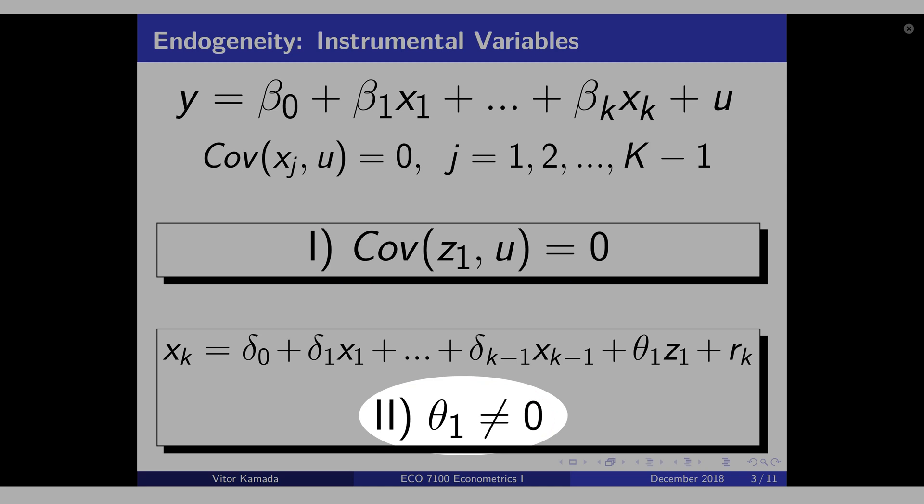This assumption here you can test empirically. Because you have the data, you have all these x and you have a candidate for z. This regression here is just ordinary least squares where you want to get a theta 1 that is statistically significant.